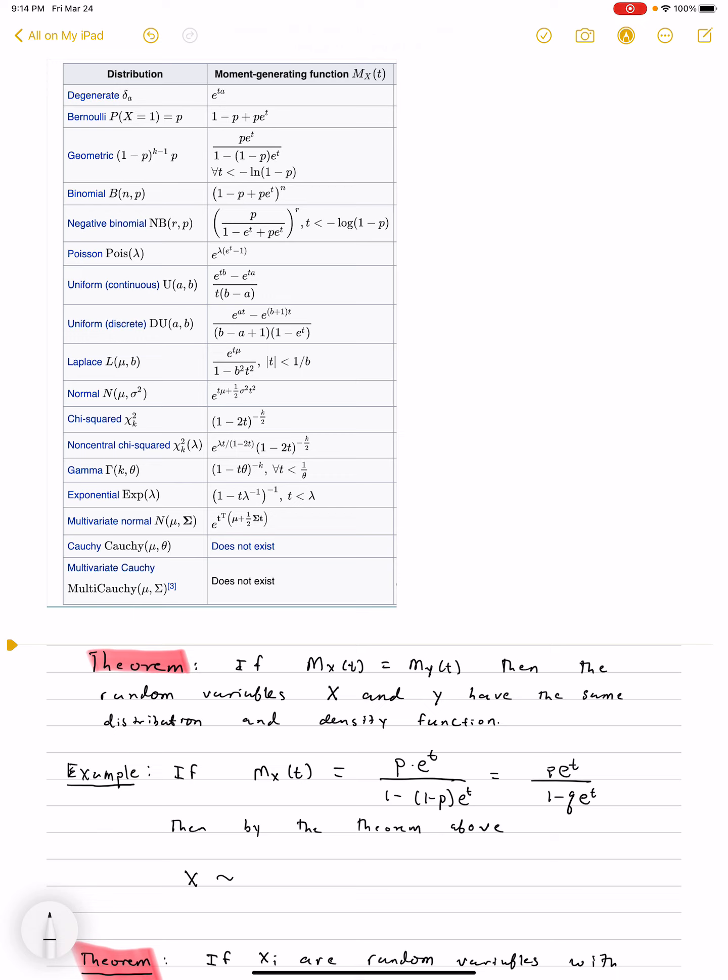As an example of this very first theorem, the uniqueness one, we are given the moment generating function M_X(t) as p e^t divided by 1 minus q e^t, where q is 1 minus p.